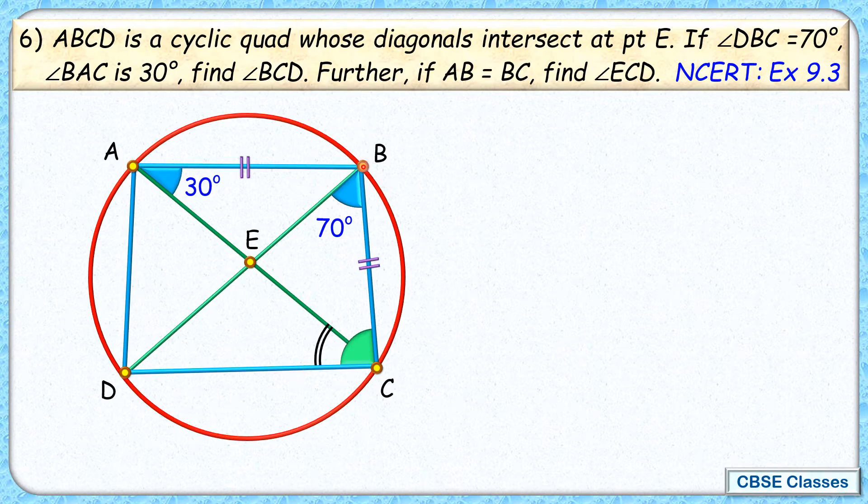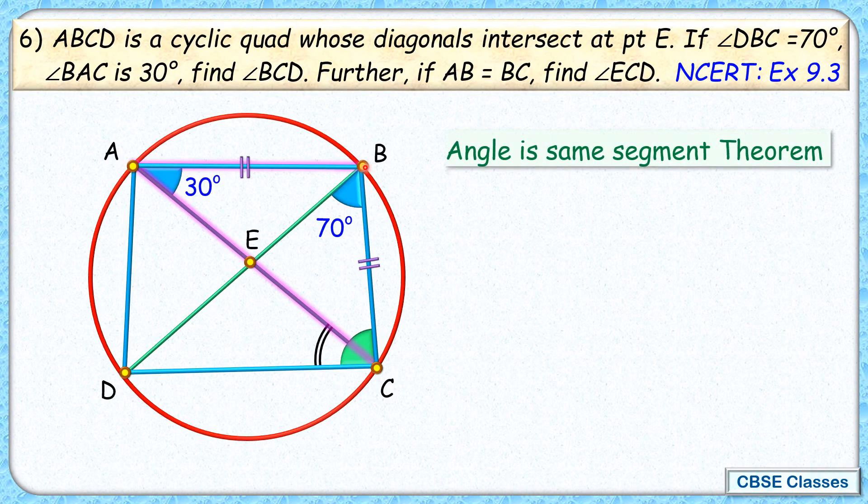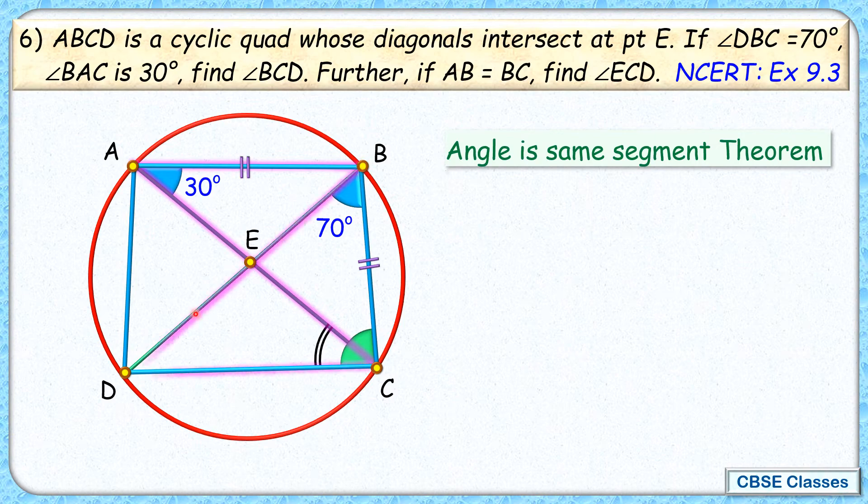Now if you look at chord BC, chord BC subtends an angle of 30 degrees at the circumference. And thus, by the angle in the same segment theorem, we can say that angle BDC, that is the angle in the same segment, this angle will also be 30 degrees.